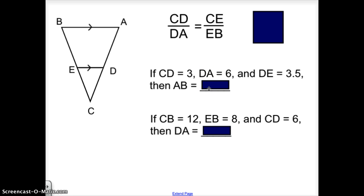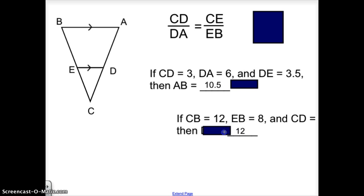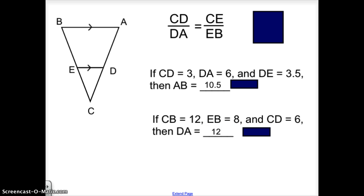If CD is 3 and DA is 6, DE is 3.5, AB would be 10.5, and DA with the given information would be 12.